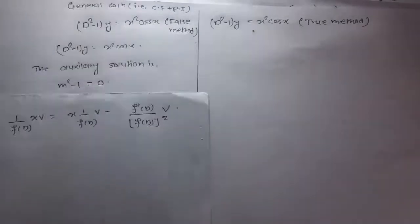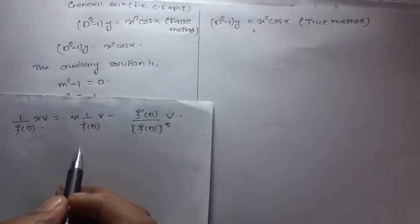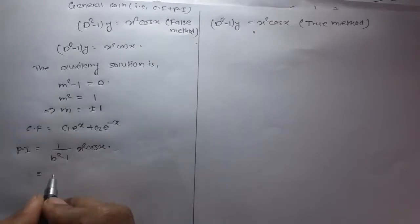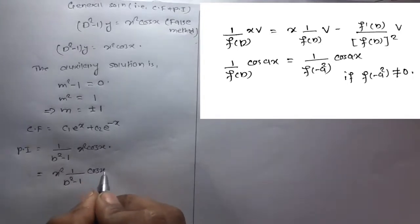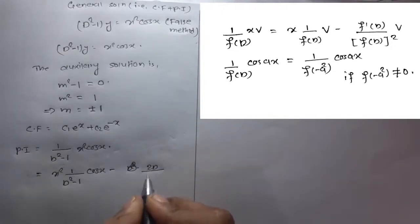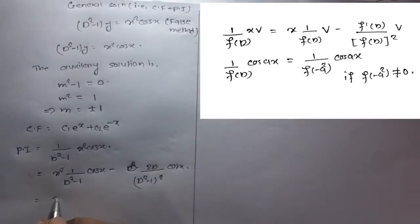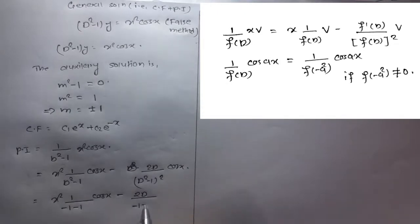We know the formula: 1/f(D) · x·v = x · [1/f(D)]v - f'(D)/[f(D)]² · v. So applying this, we get x² · 1/(D² - 1) · cos(x) minus f'(D) = 2D, so minus 2D/(D² - 1) · cos(x).